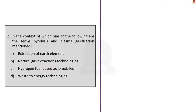In the context of which one of the following are the terms pyrolysis and plasma gasification mentioned? Option A: extraction of rare earth elements. Option B: natural gas extraction technologies. Option C: hydrogen fuel based automobiles. Option D: waste to energy technologies.